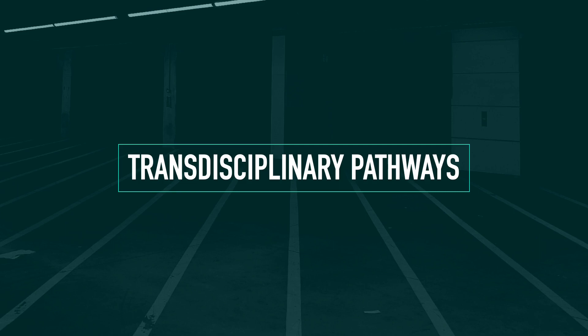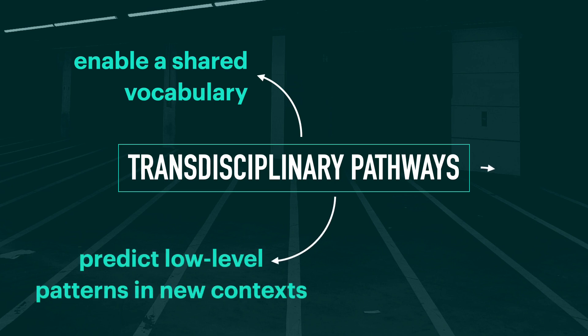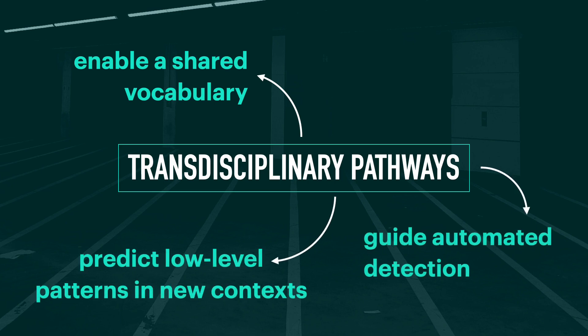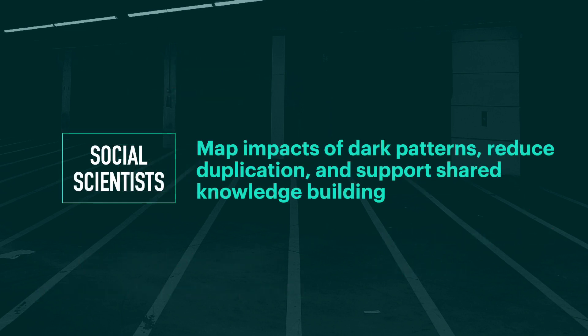Why does this ontology matter? We hope it will allow social scientists, legal scholars, regulators, and other stakeholders to operate from a shared vocabulary, enabling more alignment in user studies, sanctions, and discussions of harm. This shared vocabulary and hierarchy of patterns will also help us trace the presence and types of patterns over time, allowing scholars and regulators to anticipate the presence of existing patterns in new contexts or domains, and guide automated detection. For social scientists, the ontology will enable researchers to map impacts of dark patterns in a shared way, reducing duplication and supporting unified knowledge building.